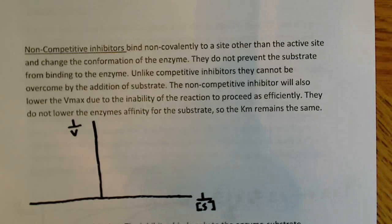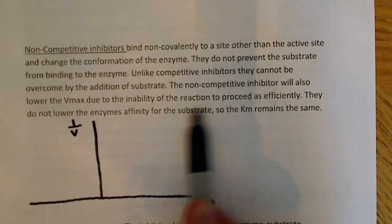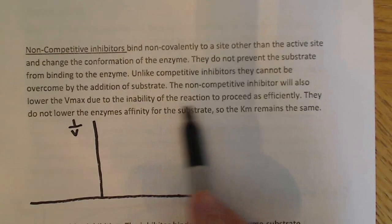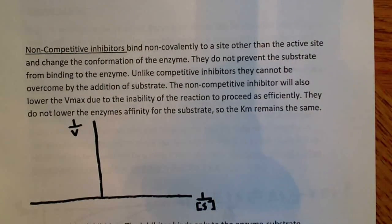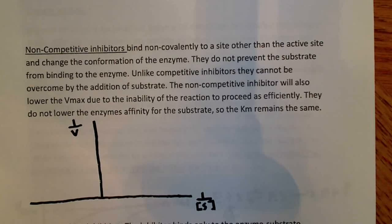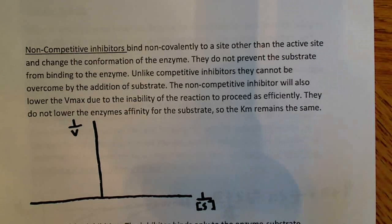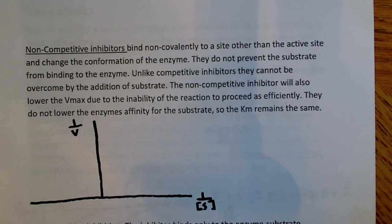Non-competitive inhibitors lower the Vmax because the reaction cannot proceed efficiently. However, they do not lower the enzyme's affinity for substrate — the enzyme is still free to bind substrate, it just can't catalyze the reaction as efficiently. Because binding affinity is unaffected, the Km remains the same.